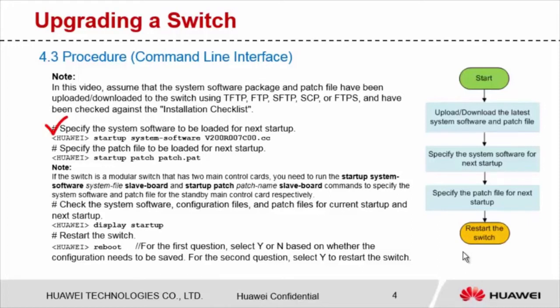Specify the system software to be loaded for next startup. Specify the patch file to be loaded for next startup. Note that if the switch is a modular switch that has two main control cards, you need to specify the system software and patch file used by the standby main control card for next startup. Check the system software, configuration files, and patch files for current startup and next startup. Run the reboot command to restart the switch and complete the upgrade.